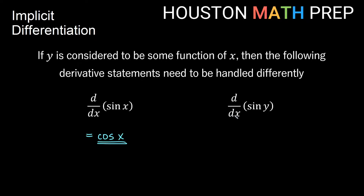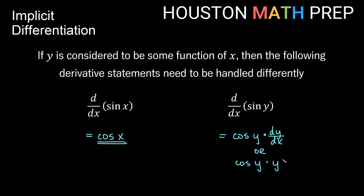The derivative with respect to x of sine of y is a different creature entirely. The idea here is I have a sine function, and inside of that sine function I have y, but remember that y is also some function of x. So the chain rule is going to give us extra information. The derivative of sine of y should be cosine y, but because y is also a function of x, think of that like a composite function — using the chain rule, we also need to take the derivative of the inside, which we call dy/dx. Or using prime notation, we write this as cosine of y times y prime.